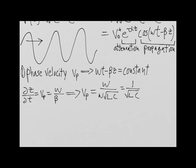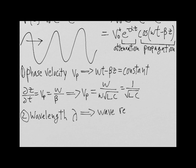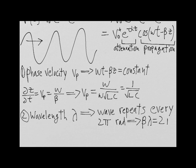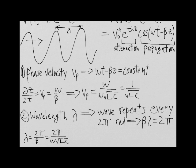The second fundamental quantity in describing traveling waves is wavelength lambda. We know that a sine wave repeats every 2 pi radians. So to find the wavelength lambda, we equate 2 pi with beta times lambda. Solving for lambda, we get 2 pi divided by beta, which is equal to 2 pi divided by omega times the square root of LC, where the units are meters.